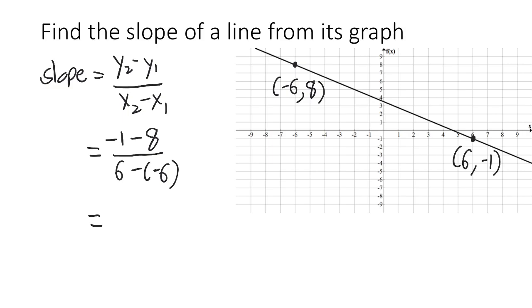Well, what do we get? Negative 1 minus 8 is negative 9. 6 minus negative 6 is 6 plus 6, which is 12. So, negative 9 over 12 is our slope, but we want to simplify the fraction before we express it. So, that simplifies to negative 3 over 4.